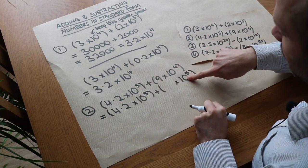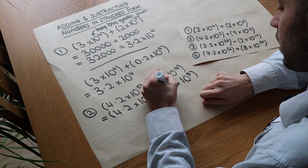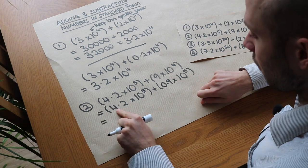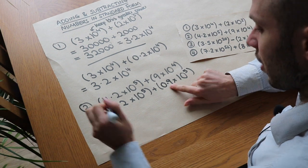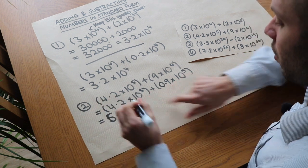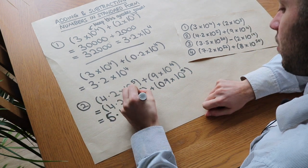So that becomes 10 times bigger. That has become 10 times smaller, so it's 0.9. And then we can just do 4.2 plus 0.9, which is 5.1 lots of 10 to the 5. And we are done.